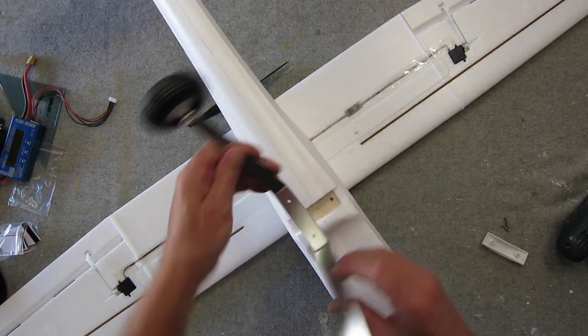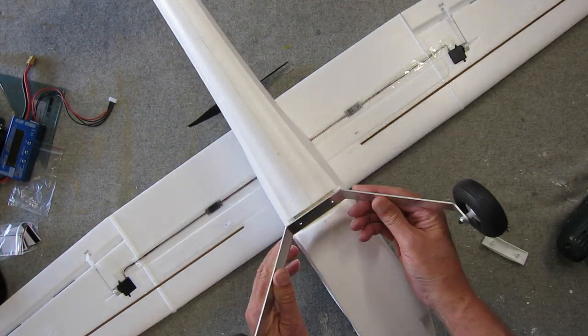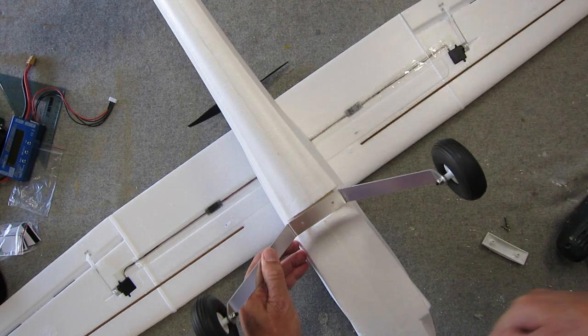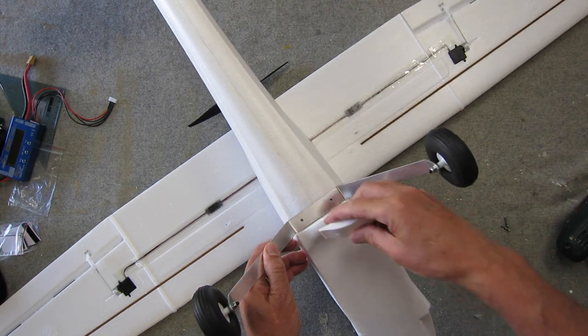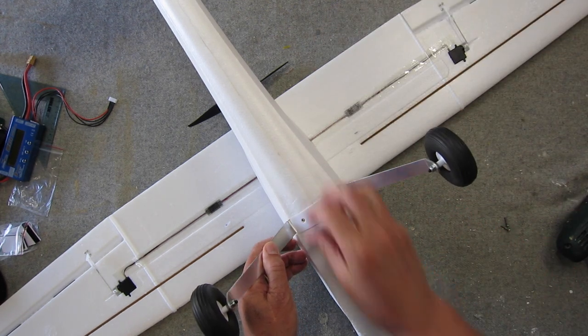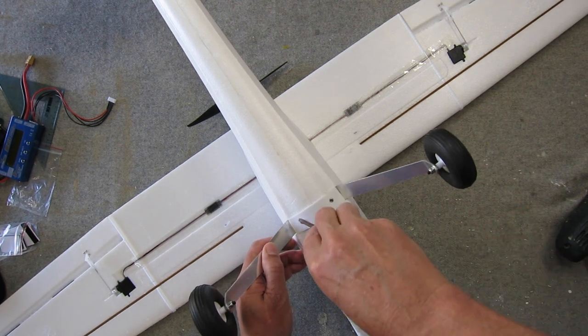Now to attach the landing gear to the fuselage. Make sure you get it the right way around. It needs to angle forward towards the nose, otherwise your plane's going to nose over every time you take off. You use the provided plastic bracket and a couple of screws.